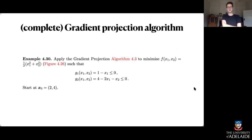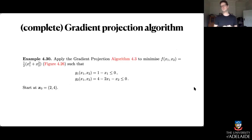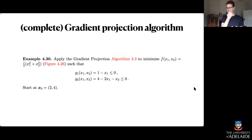We're going to use a full gradient projection algorithm to minimize a pretty simple function — just a quadratic function — and you know where the global minimizer of that is. It's at zero, zero. It's a two-dimensional function.